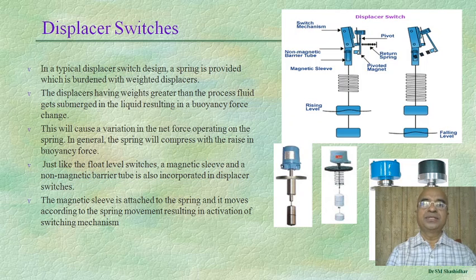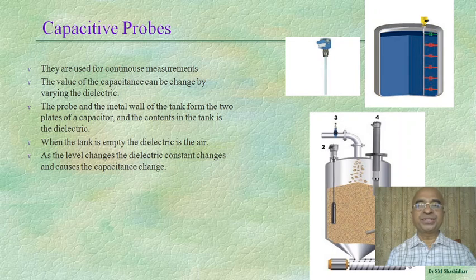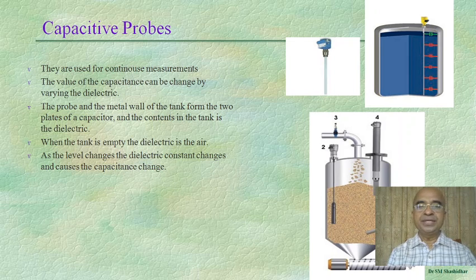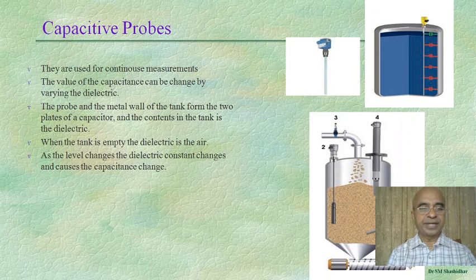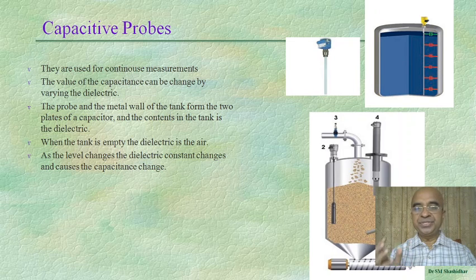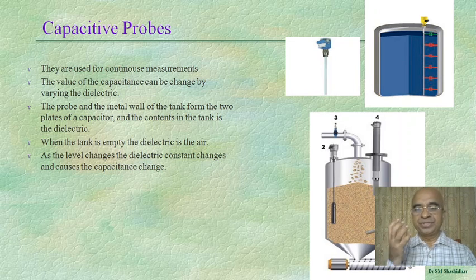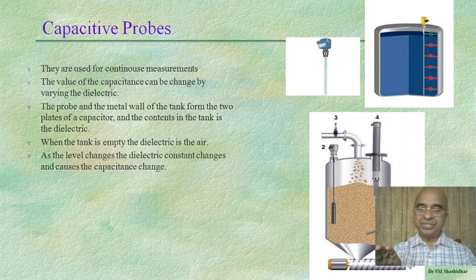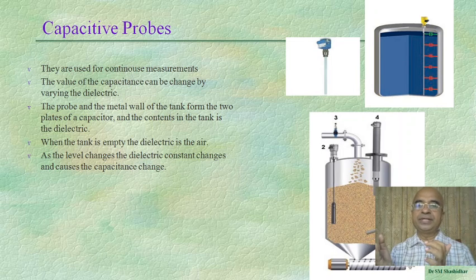Capacitive probes are used for continuous measurements. The value of capacitance can be changed by varying the dielectric. The probe and the metal wall of the tank form the two plates of a capacitor, and the contents of the tank are the dielectric. When the tank is empty, the dielectric is air. As the level changes, the dielectric constant changes and causes a change in capacitance.